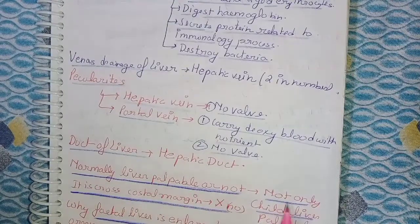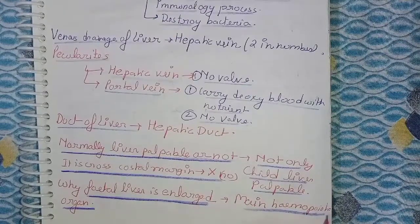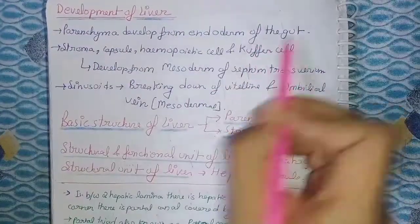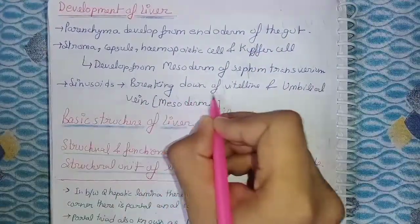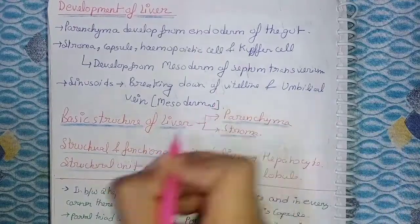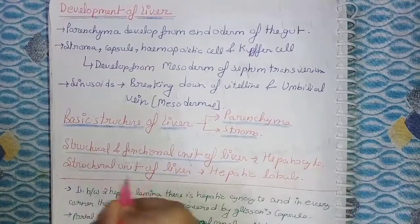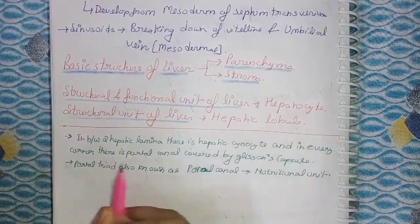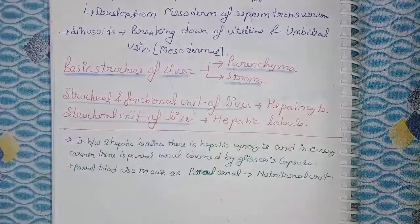The duct of the liver is the hepatic duct. Is the liver normally palpable? No, it is not palpable — it is palpable only in children. Does it cross the costal margin? No. Why is the fetal liver enlarged? Because it is mainly a hemopoietic organ. Development: the liver parenchyma develops from the endoderm of the gut. The capsule, hemopoietic cells, and Kupffer cells develop from the mesoderm of the septum transversum. Sinusoids develop from the breakdown of vitelline and umbilical veins. The structural and functional unit of the liver is the hepatocyte, and the structural unit is the hepatic lobule. Between two hepatic laminae is the hepatic sinusoid, and at every corner is a portal canal covered by Glisson's capsule. The portal triad is also known as the portal canal and is the nutritional unit.